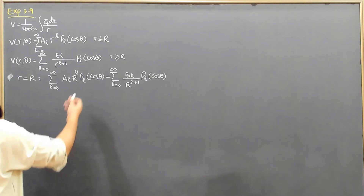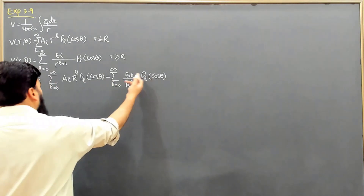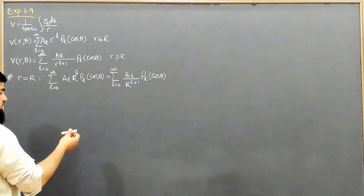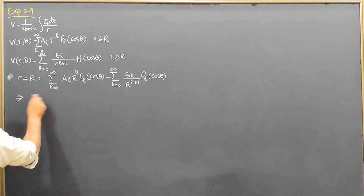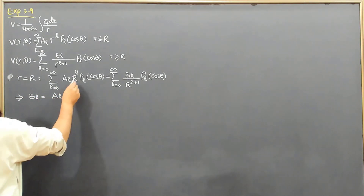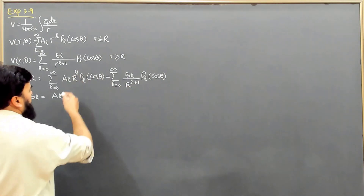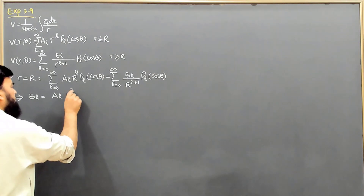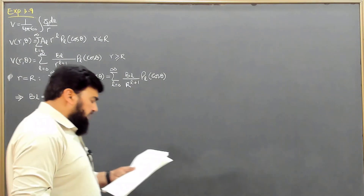Since P_l(cos theta) cancels, I can write that B_l equals A_l * R^l * R^(l+1), which becomes R^(2l+1). So B_l equals A_l * R^(2l+1). Now we have already done in Chapter 2 that when we are crossing the surface of this sphere, where a charge density is glued on its surface, there is a discontinuity.